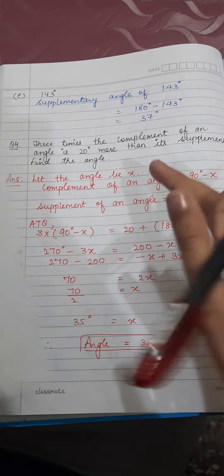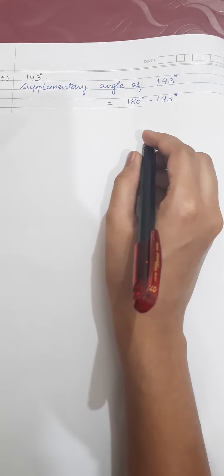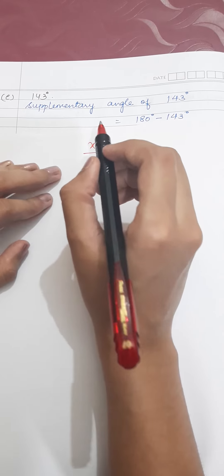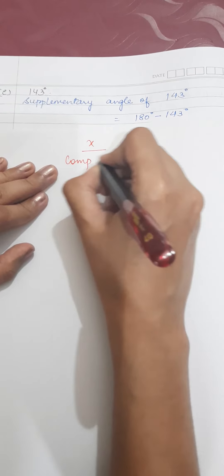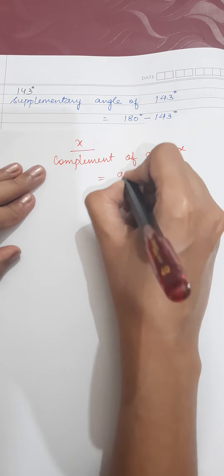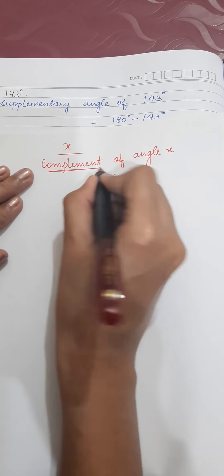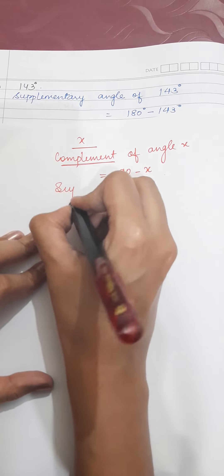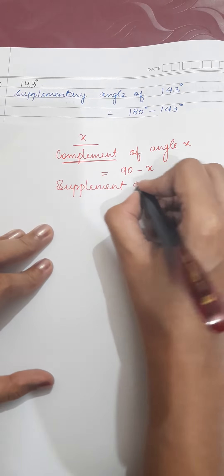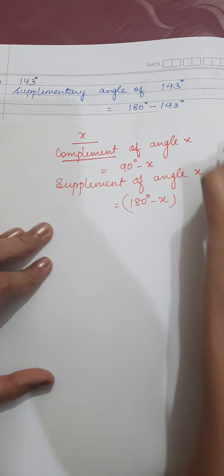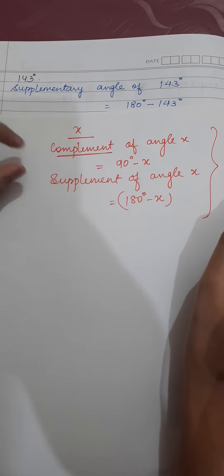Before starting, I want to give you a quick review. If any angle is there — let's assume that angle as x — then this angle x will have a complement. The complement of angle x is going to be 90 - x. Complement means two angles whose sum should be 90. If I have one angle x, the other is going to be 90 - x. The supplement of the same angle x is going to be 180 - x. These two basics are what we are going to use in the statement sums.